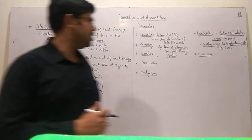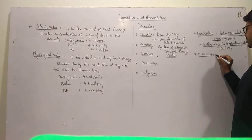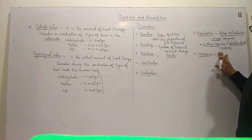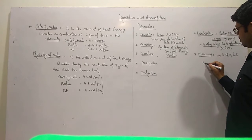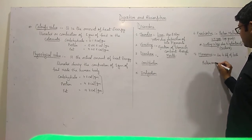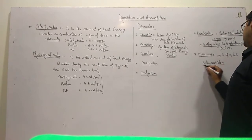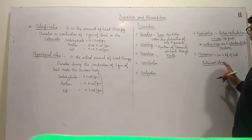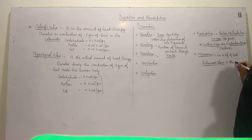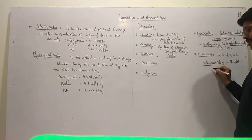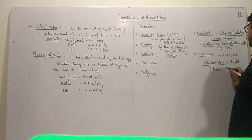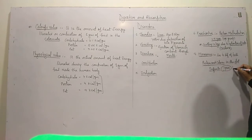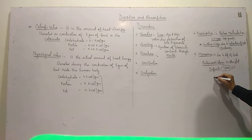Marasmus is a more severe malnutrition due to deficiency of both protein and calories. It is found in infants below one year of age.